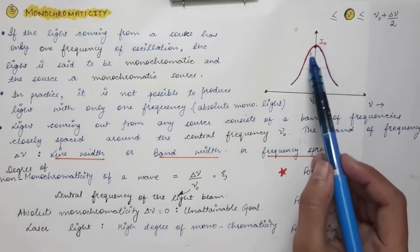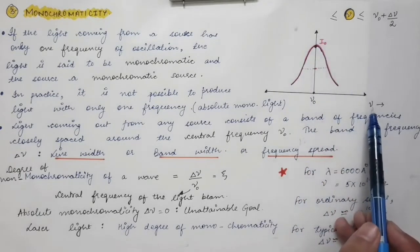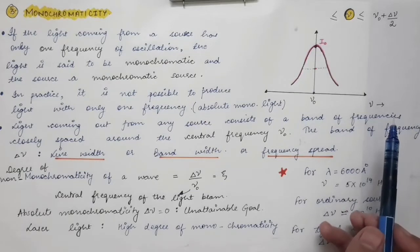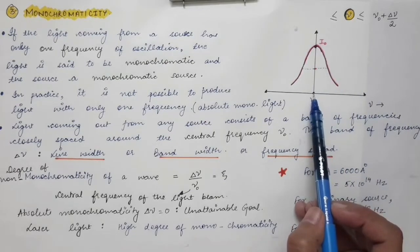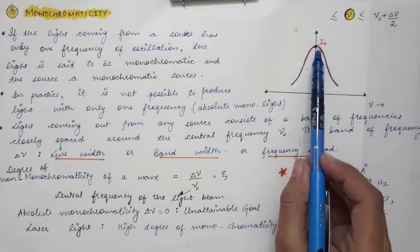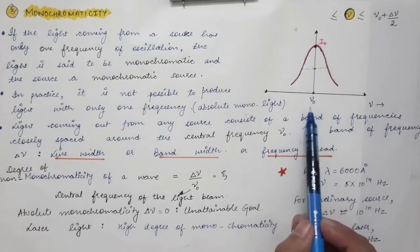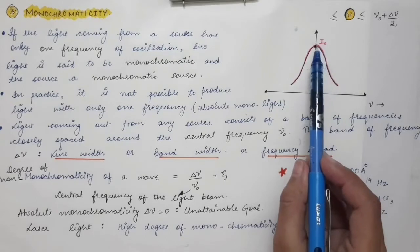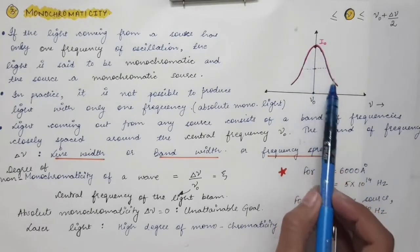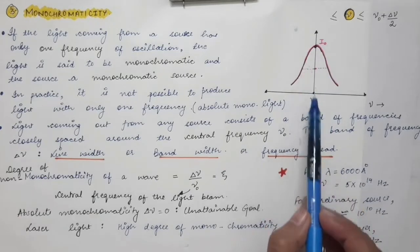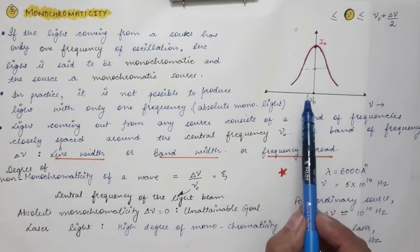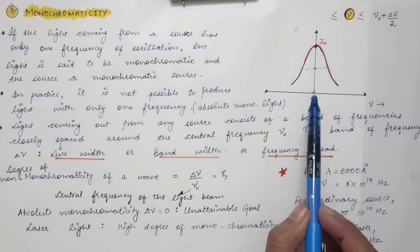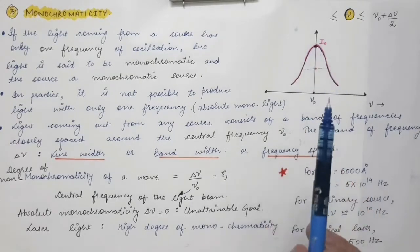This is the diagram of intensity versus frequency for radiations emitted from any source — it can be a laser or any ordinary light source. At frequency ν₀, the intensity of light is maximum, meaning more photons are emitted at this frequency. As you increase or decrease the frequency from ν₀, the number of photons decreases, so their intensity is lower. Only at ν₀ is the largest number of photons emitted.